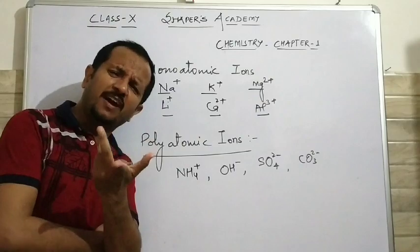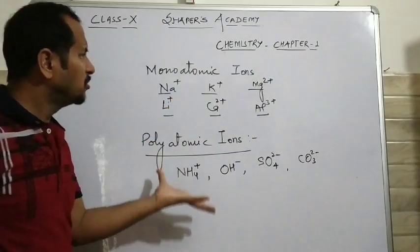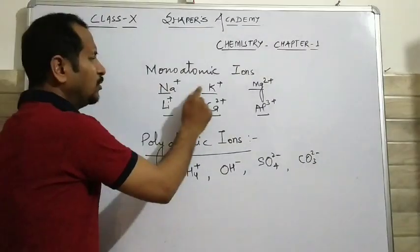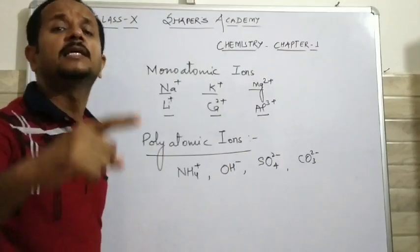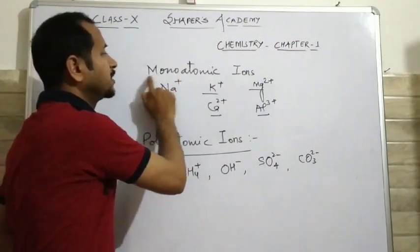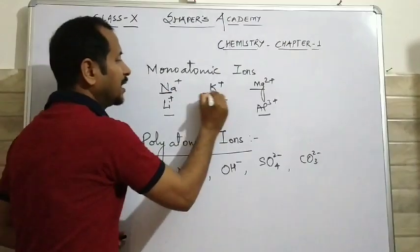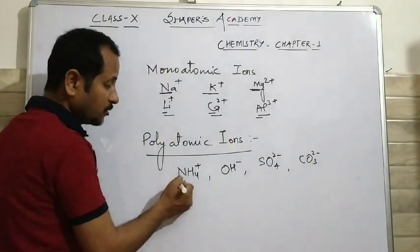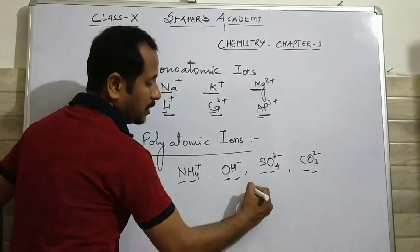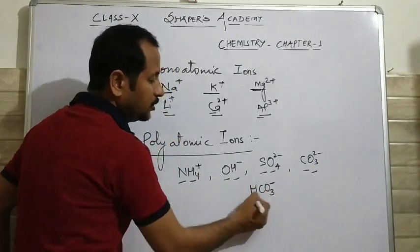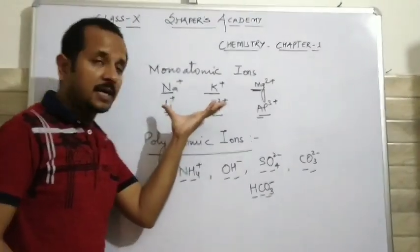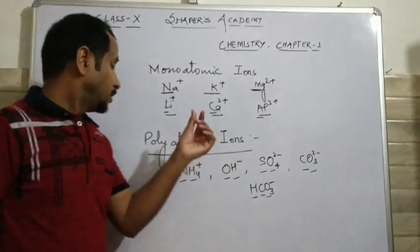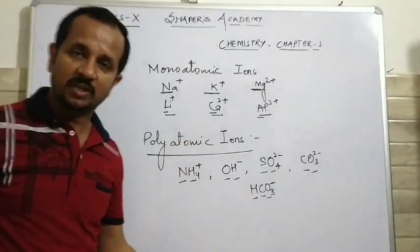Now how do I find which is monoatomic or polyatomic? In one identification only. If you see only one capital letter in an ion, that will be the representation of monoatomic ions. The polyatomic ions consist of two or more capital letters. So monoatomic ions are ions which have only one atom in them, and polyatomic ions are ions which have two or more than two atoms in them.